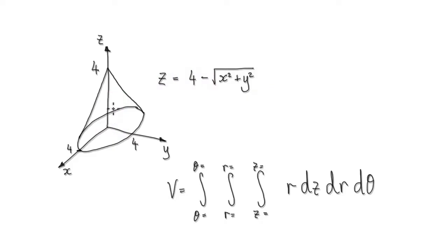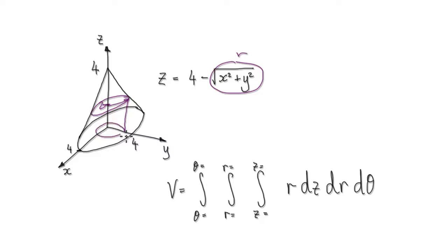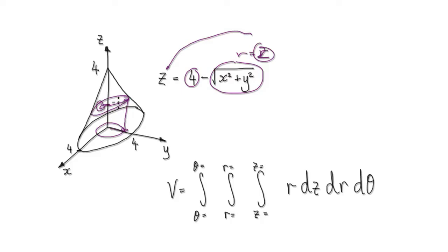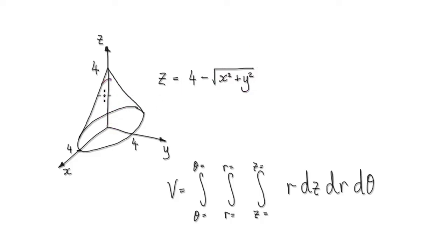So if you look at a height of 2, the radius here would be 2. Project this down to the xy plane — this will have a circle of radius 2. So when r is 2, you can see 4 take away 2 will give you an elevation of 2, and so on. So the surface of this cone is given by this.